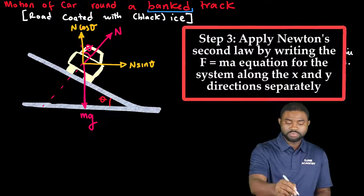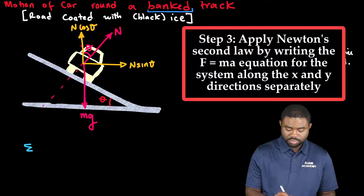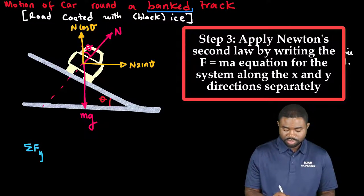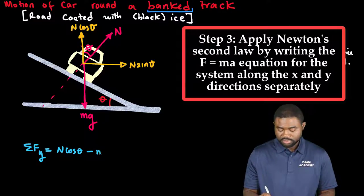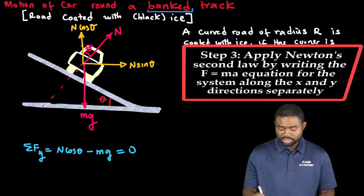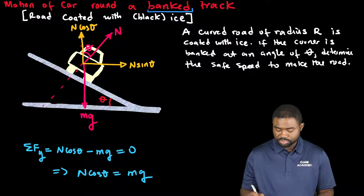So let's start by applying Newton's second law. The sum of forces along the y direction is equal to N cosine theta minus mg. This is equal to zero. This means that N cosine theta is equal to mg.